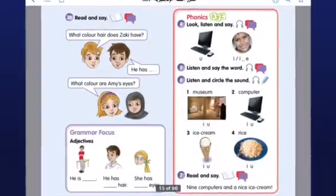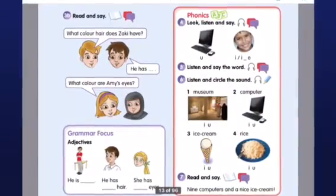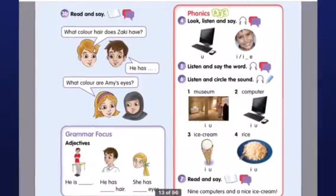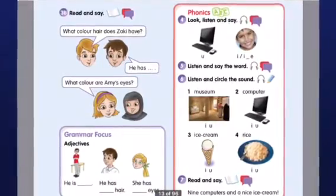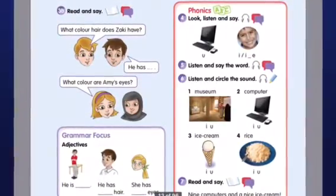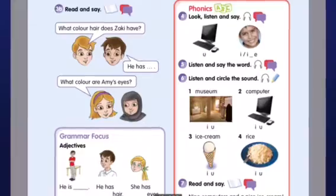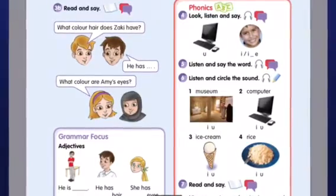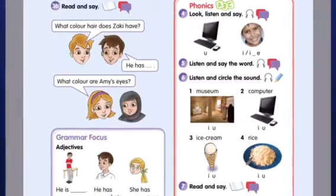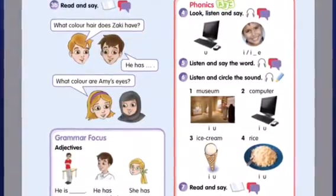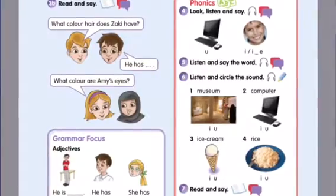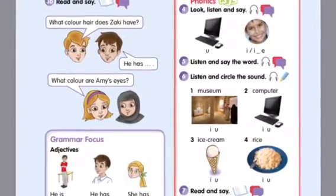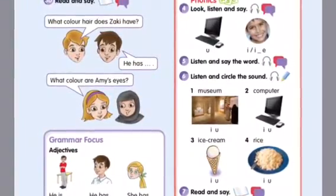Read and answer: What color hair does Zucky have? He has brown hair. Number two, what color are Amy's eyes? They are green. Thanks for watching. Prepared by Miss Nora Gazali.